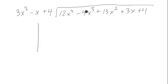What we're going to do is put the coefficients of this right here, so 12, minus 4, 13, 3, and 4. Then we have a line here.